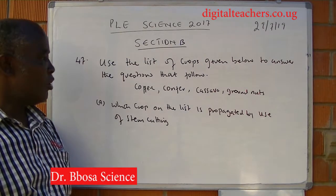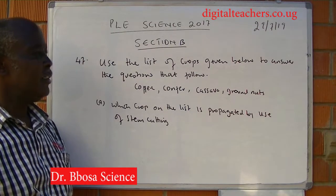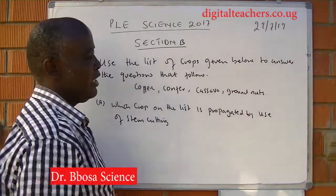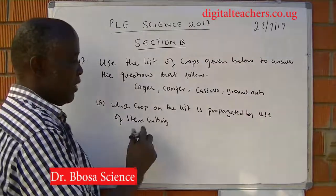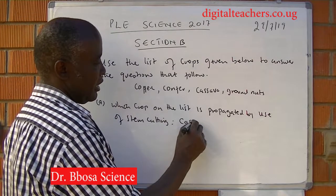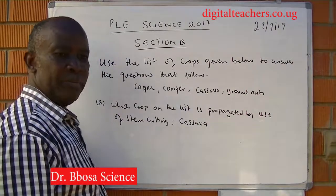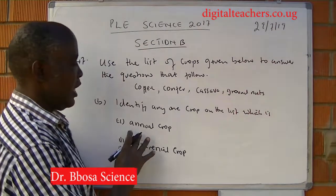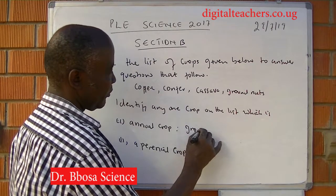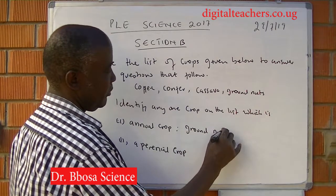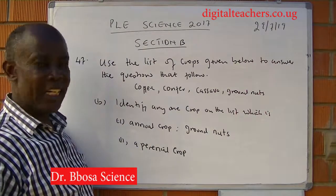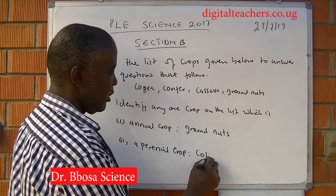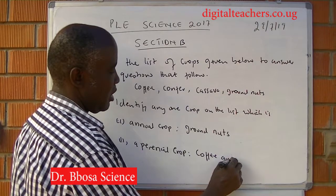The list is: coffee, conifer, cassava, groundnuts. Part A: which crop on the list is propagated by use of stem cutting? That is cassava. Part B: identify any one crop on the list which is annual. Annual is groundnuts — it matures within a year. Then perennial: we have coffee and conifer.